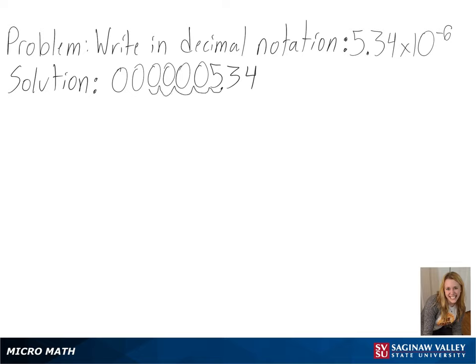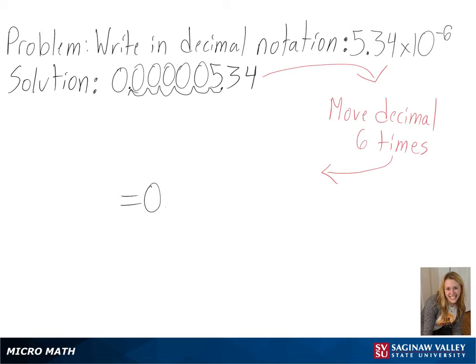And since our exponent is 6, we can add six zeros so we are able to move our decimal six times. So we get 0.000000534 as our final answer.